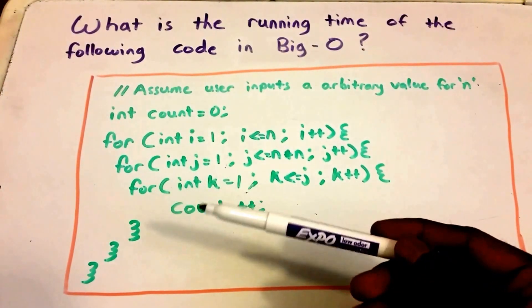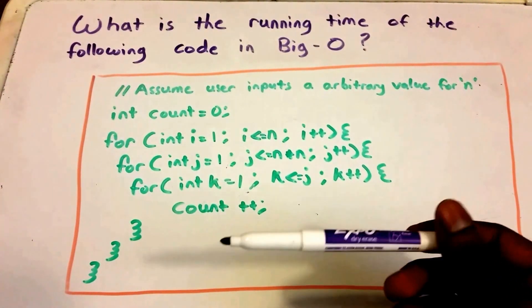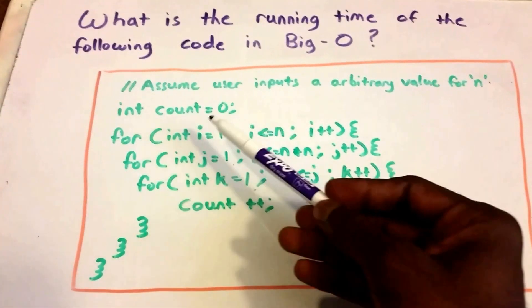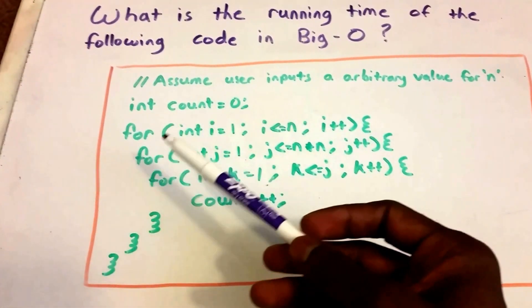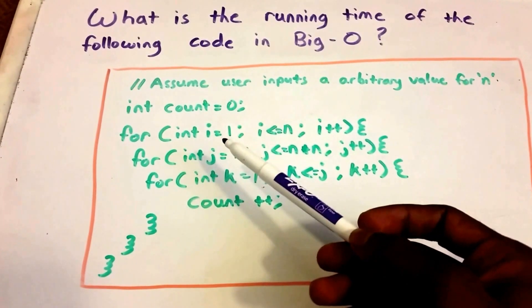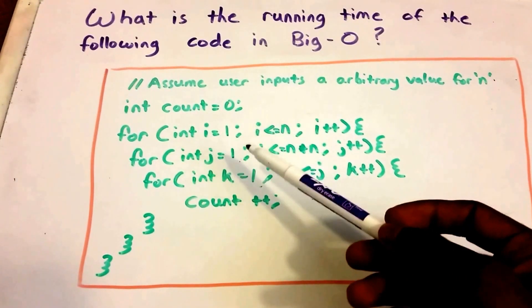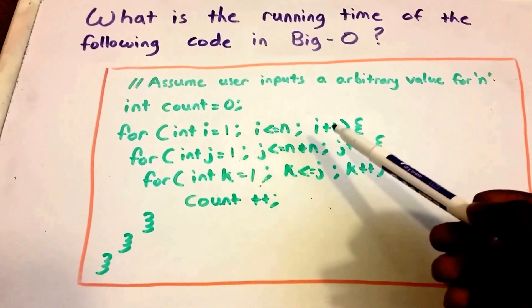We want to know the Big O of this code fragment. It says integer count equals 0, and then it has a for loop. The for loop runs from i equals 1 all the way while i is less than or equal to n, and then i increments by 1 each time.